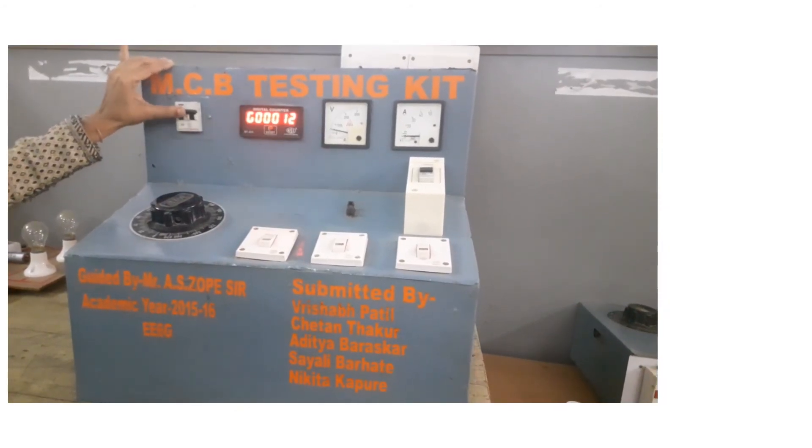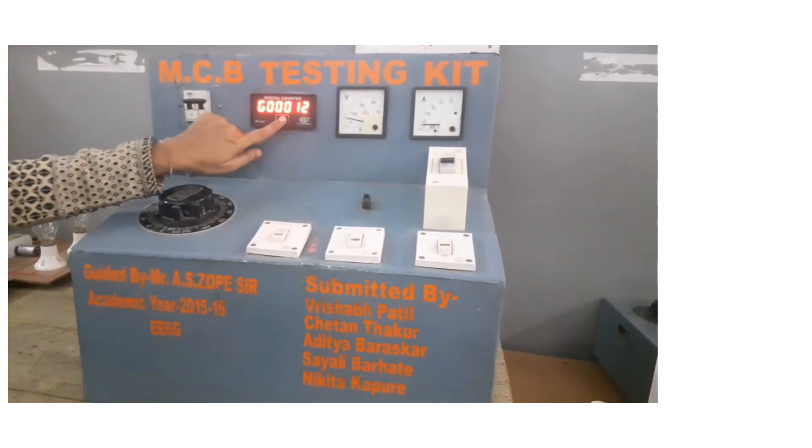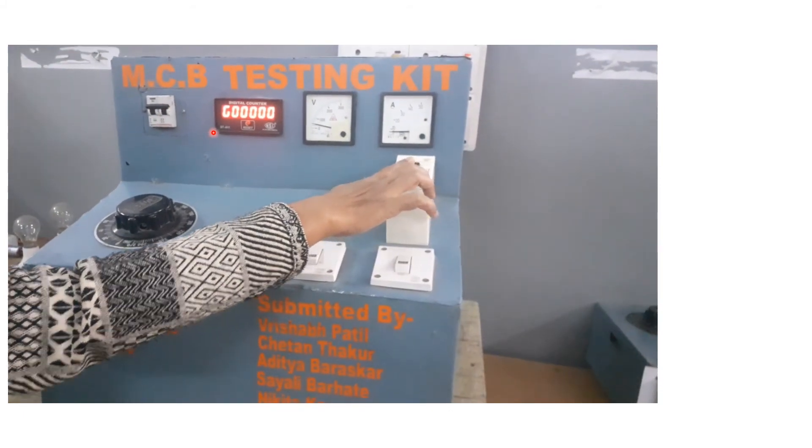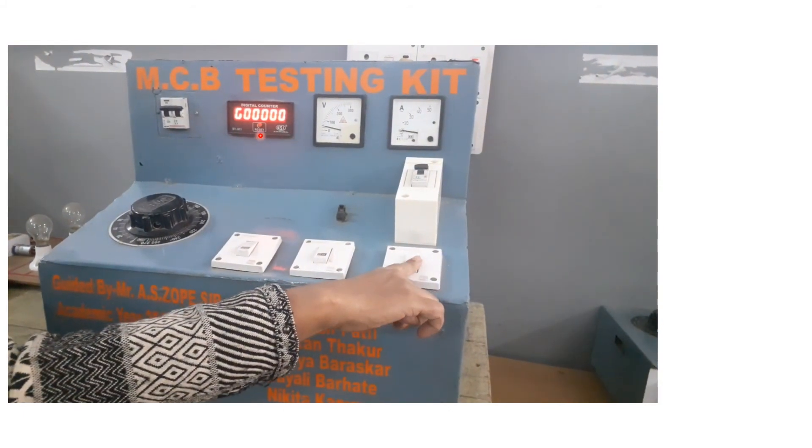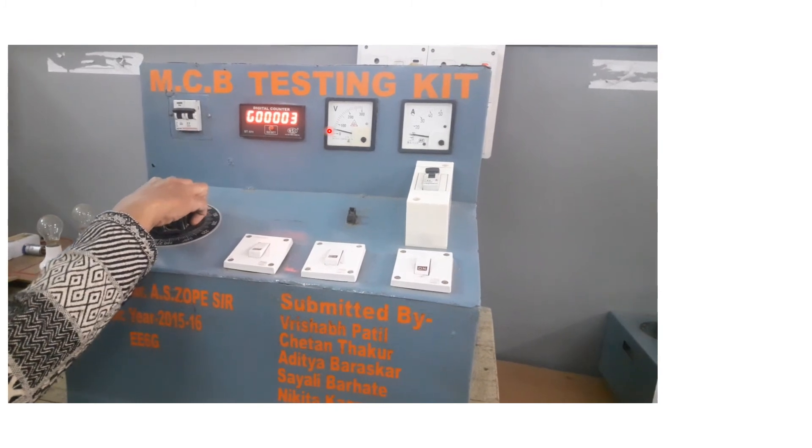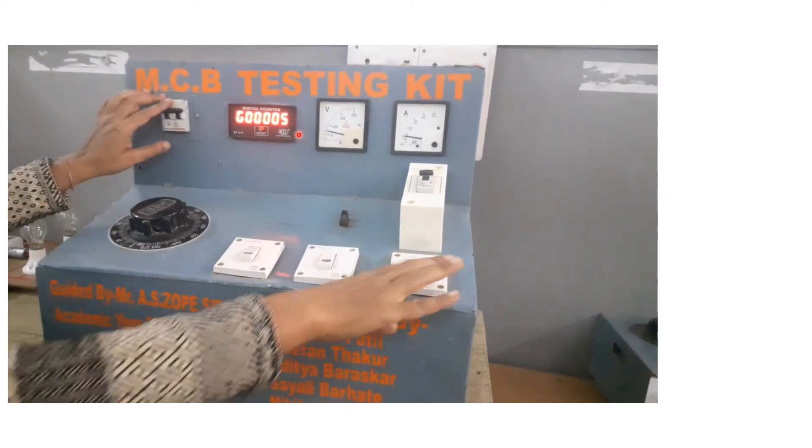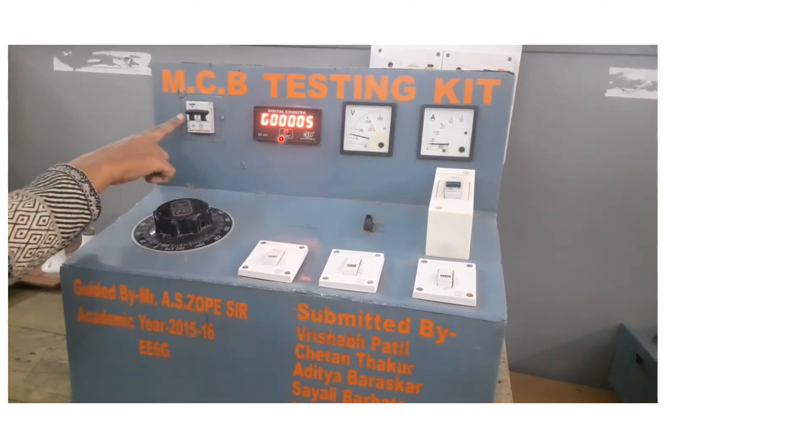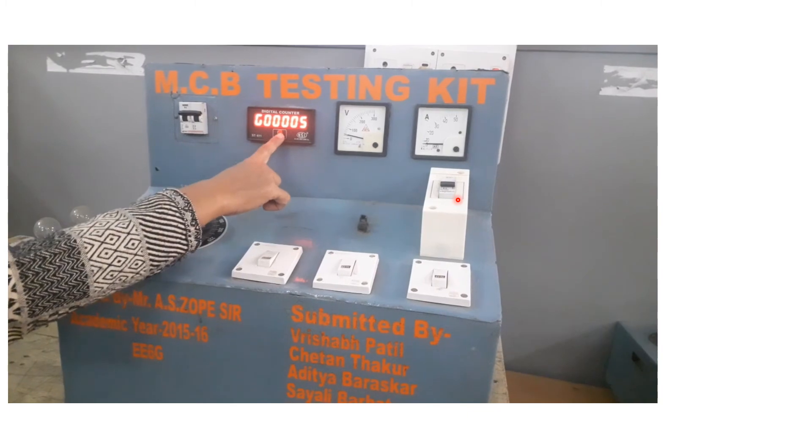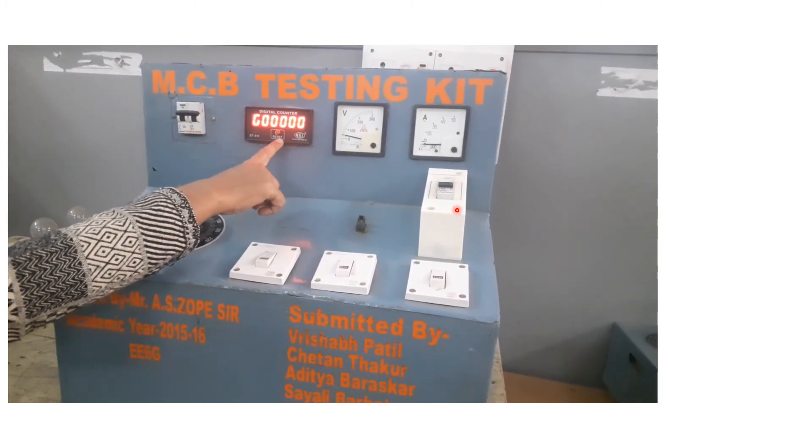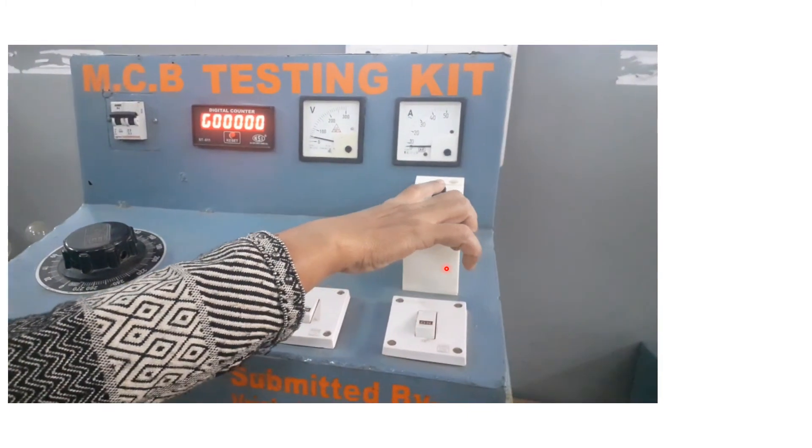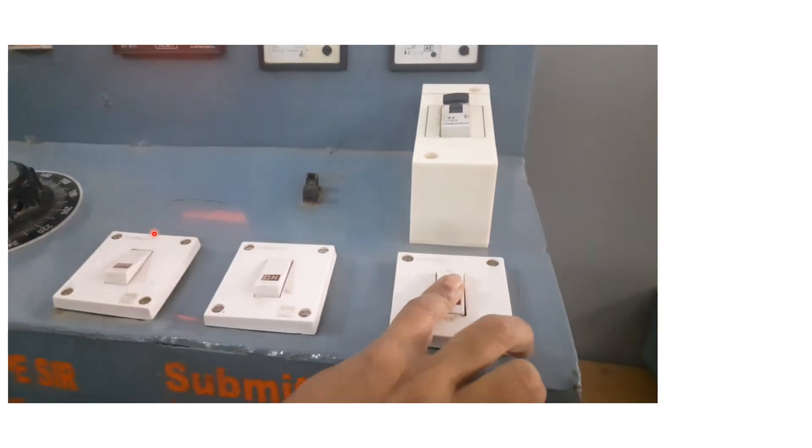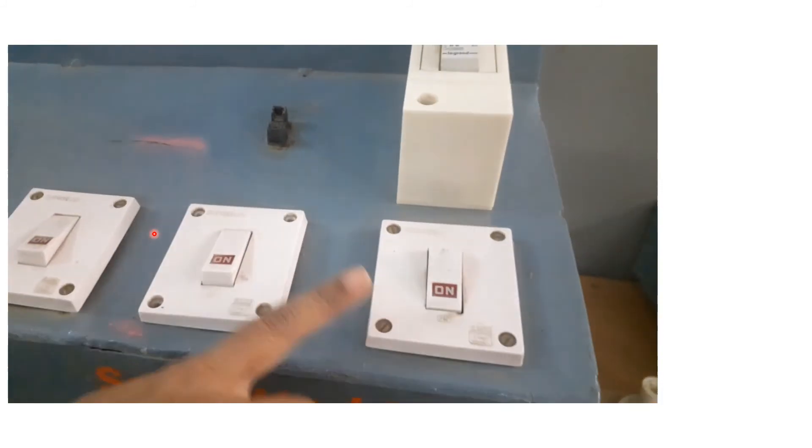Now we are performing the actual experiment on MCB testing. So to start it first you need to make the main MCB on. You need to check value of digital counter whether it shows you zero or not. If it shows some value then with the help of this knob you have to make it zero. You have to reset it. You are having this MCB under test. Make it on. Make the main switch S3 on and then with the help of this variac you need to apply the value of rated value of current. So rated value is 6 ampere. So now here I am going to apply 10 ampere and we will see how much time your MCB trips.